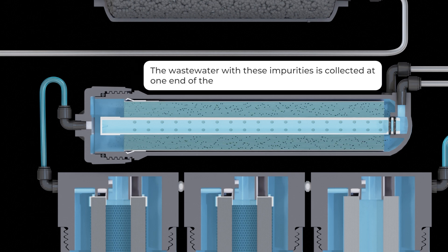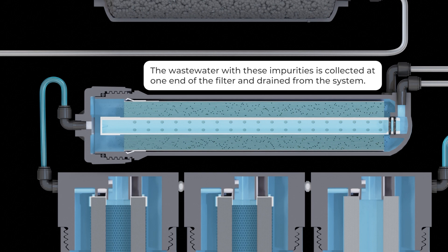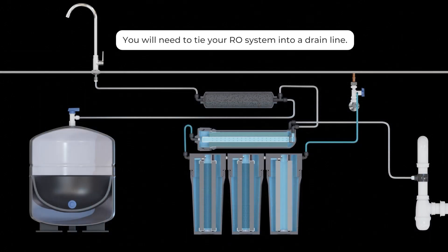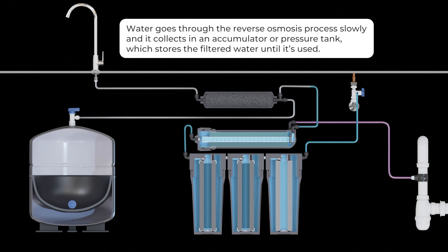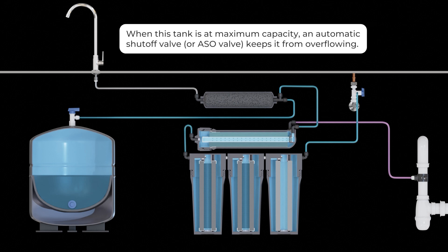The wastewater containing these impurities is collected at one end of the filter and discreetly drained from the system, so you'll need to tie your reverse osmosis system into a drain line. Water goes through the reverse osmosis process slowly, and it collects in an accumulator or pressure tank, which stores the filtered water until it's ready to be used. When this tank is at maximum capacity, the automatic shutoff valve, or ASO valve, keeps it from overflowing.